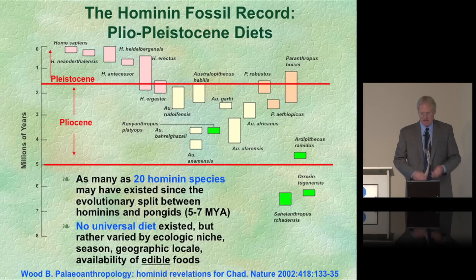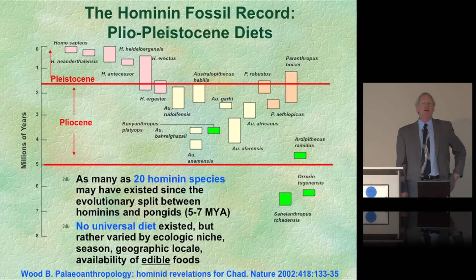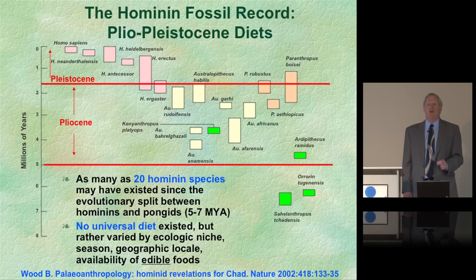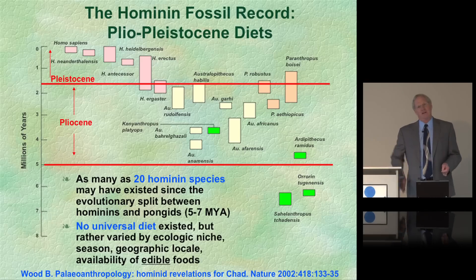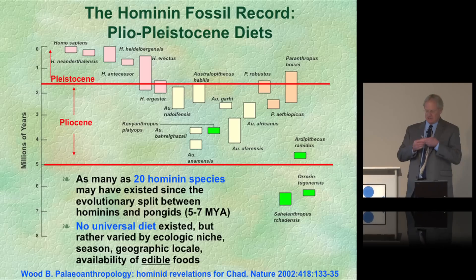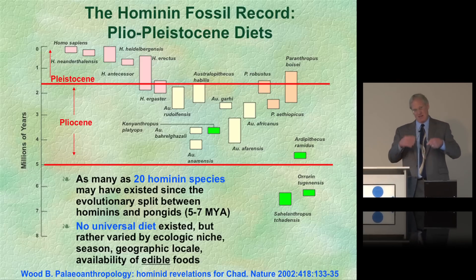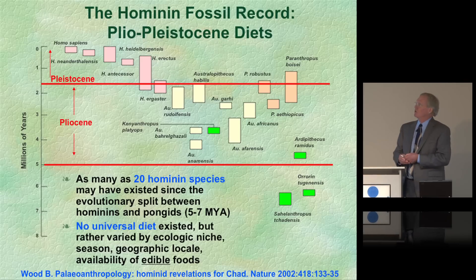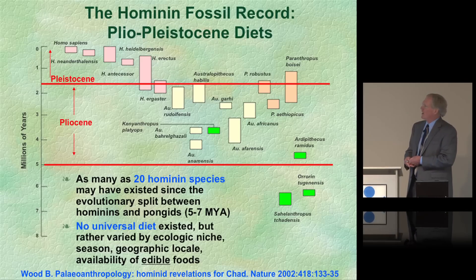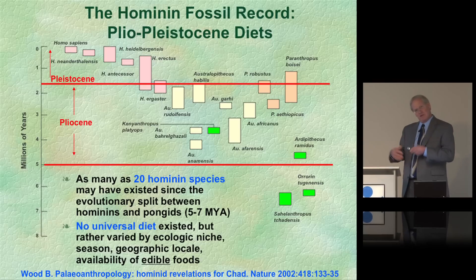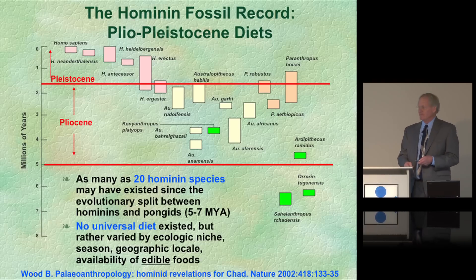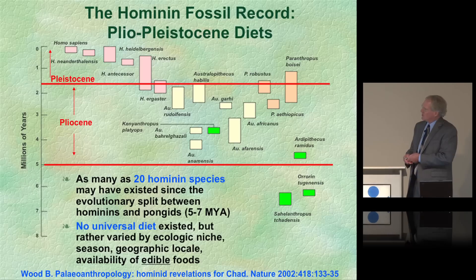Anytime we're talking about the origins and evolution of the human diet, we're really talking about the origins and evolution of humanity itself. This slide is going to set the stage for the rest of the lecture. The word 'hominin' means a bipedal ape. These rectangular boxes represent different species of our ancestral humans, and the length of each box indicates the time in the geologic record in which we find those fossils.